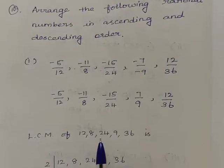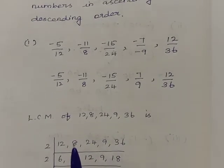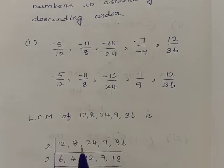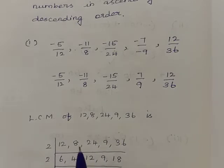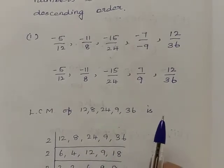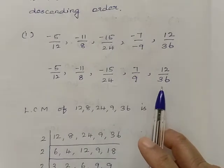To write in ascending or descending order, the denominator's value should be the same so that we can compare the numerator values and find the ascending or descending order. So first we'll find the LCM.